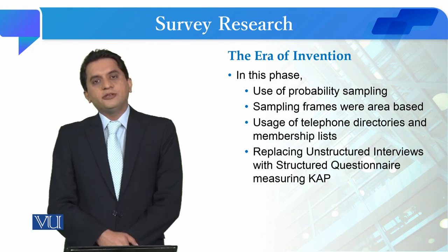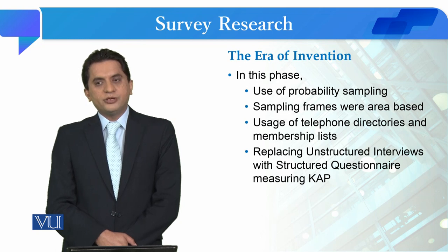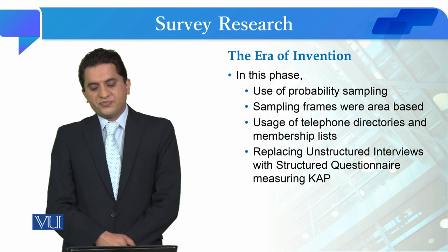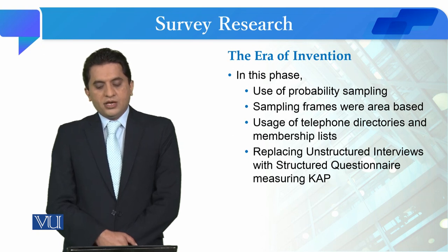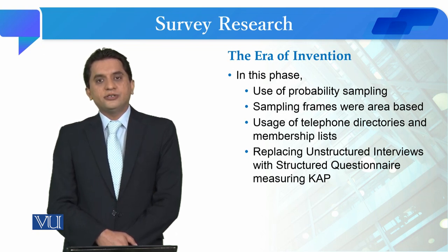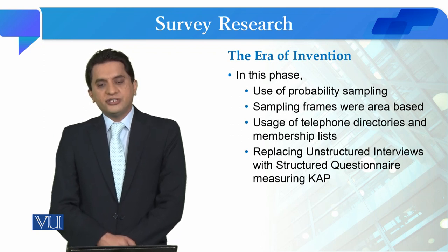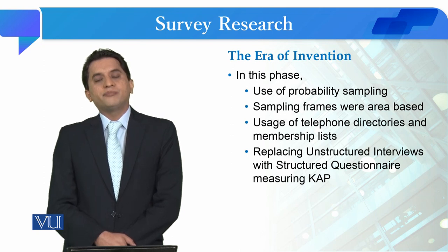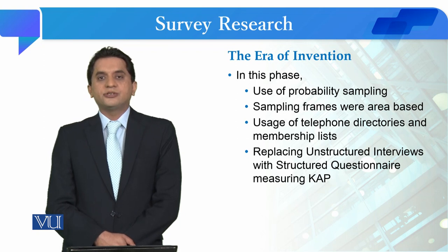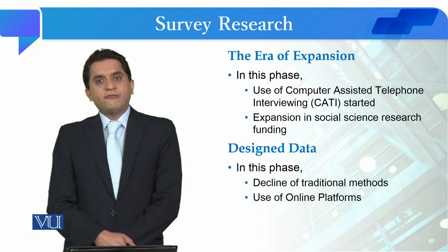During this time period, probability sampling was properly introduced in survey research. The trend of drawing a sample from a sampling frame following probability theory developed. The sampling frames of that era were area-based, using telephone directories and membership lists of community members. Also during this era, the survey research tool changed from unstructured interviews to the structured questionnaire, through which knowledge, attitudes, and practices of community members were observed — also called KAP studies.